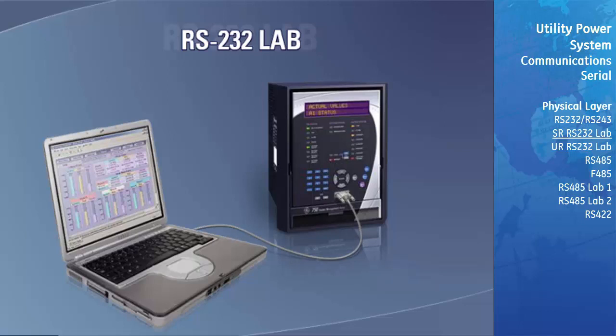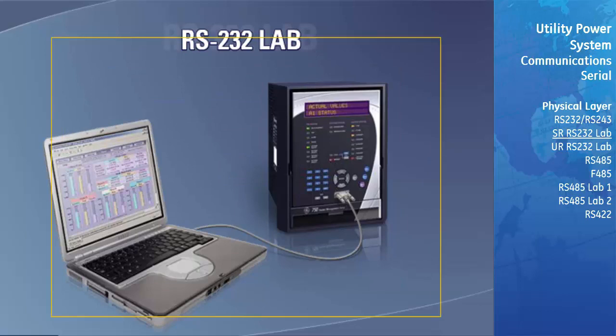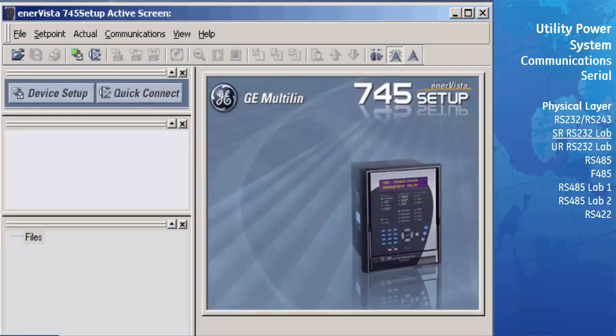We'll begin by connecting the cable between the RS-232 serial port of the computer and the front RS-232 port of the GE Multilin relay. The first step in using the setup program is to configure the communications to allow us to talk to the relay. We will do this by selecting the Device Setup button located above the online window on the left side of the screen.